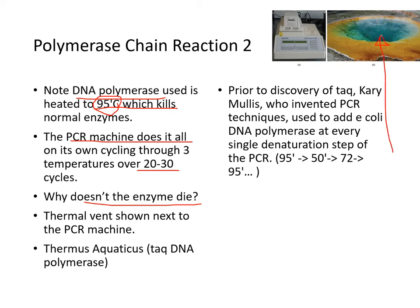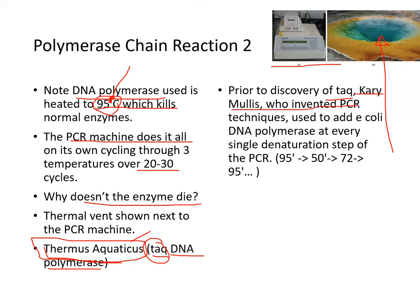Here's a thermal vent shown next to the PCR machine. Thermal vents led to the discovery of a microorganism called Thermus aquaticus, Taq. The DNA polymerase isolated from this organism is called Taq polymerase, and it resists denaturation at high temperatures because it has so many cysteine bridges. Before the discovery of Taq, Kary Mullis, who invented PCR, used to add E. coli DNA polymerase after every single denaturation step. It was a very expensive procedure.